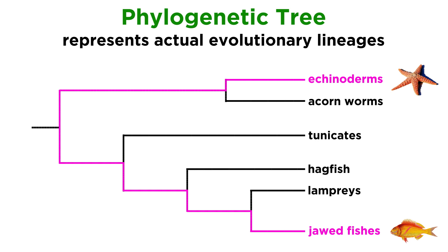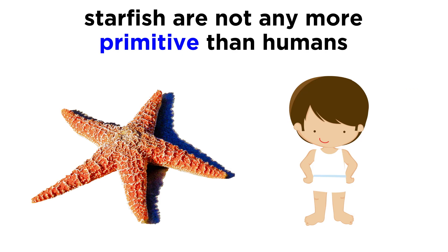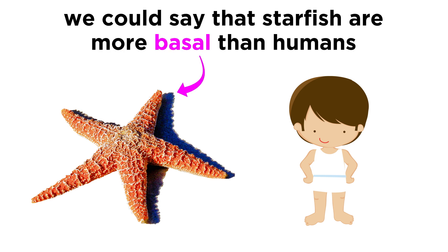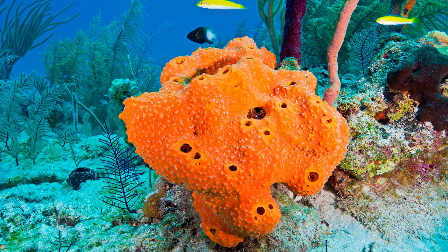Since the echinoderms are so far away from the jawed fishes, it may seem tempting to refer to them as primitive animals and the jawed vertebrates as complex animals. However, these terms are misleading. A starfish is no more primitive than a human — starfish do lack many human characteristics, but likewise humans lack many starfish characteristics. It is more accurate to call organisms that branched from the evolutionary tree long ago as basal animals, since they are so distantly related to many other extant groups. A sponge may seem primitive, but they have been evolving for just as long as any other extant animal species — they simply diverged earlier.